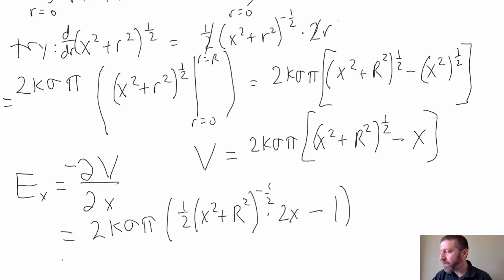So let's see what I finally get. This is equal to, looks like this one half will cancel that thing. So what we finally get is 2K sigma pi times, this will be X over the square root of X squared plus R squared. That's just from that. Minus 1, but it's the negative of that. I can't forget my negative.